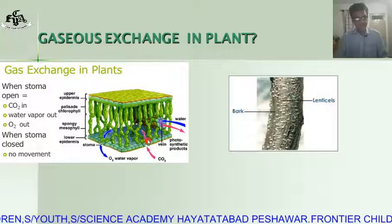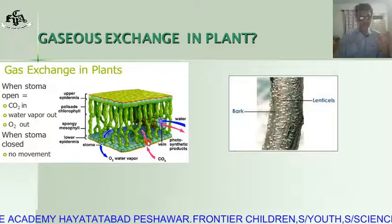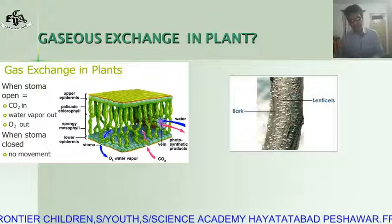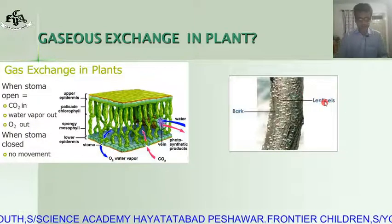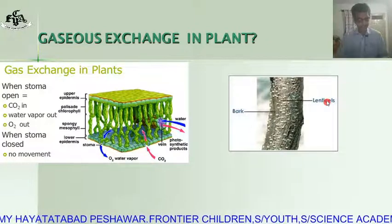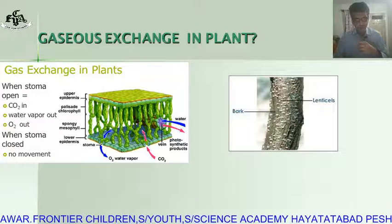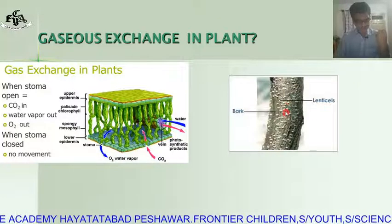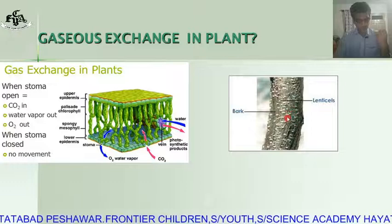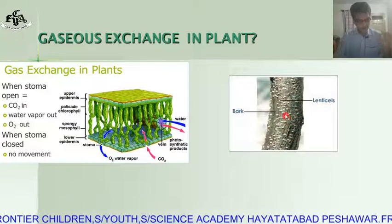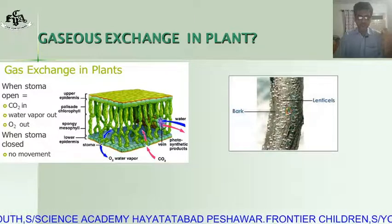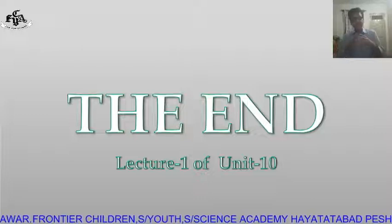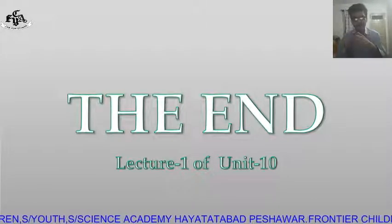Stomata are present on the leaves and also on young green shoots and branches. Another structure used for gaseous exchange is the lenticel. Lenticels are small, round, oval, and elongated pores present on the bark of the woody stem, as seen in this diagram, and also on some fruits. This opening is used for gaseous exchange. So lenticels also help in gaseous exchange in some plants. That was lecture number 1 of unit number 10. Thank you very much.